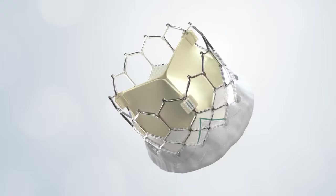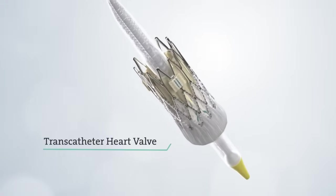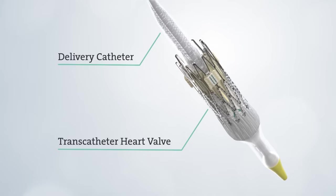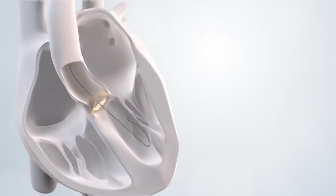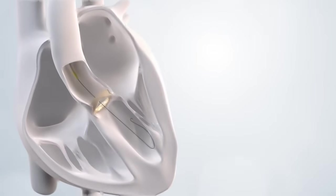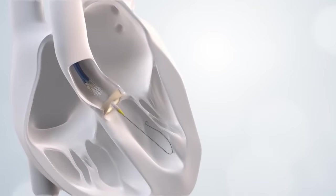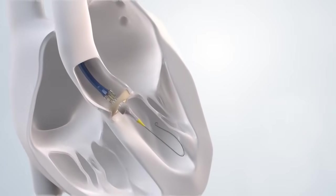During the next step, your new transcatheter heart valve is crimped onto a delivery catheter, which makes the valve small enough to fit through a sheath, so it can be delivered to your heart. Using a special type of x-ray, your doctor will guide the delivery catheter carrying the new valve through the sheath and up to your aortic valve.